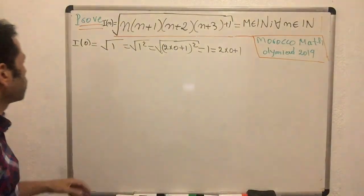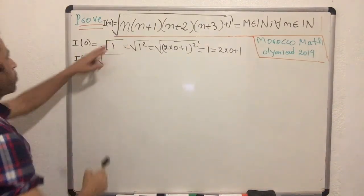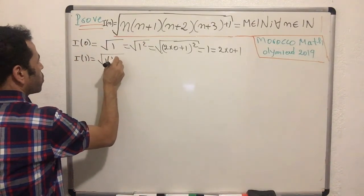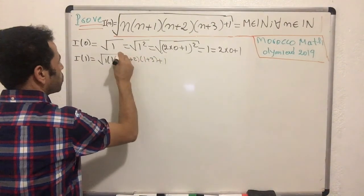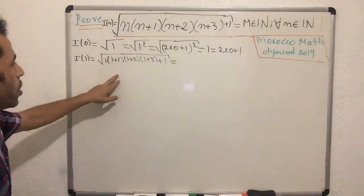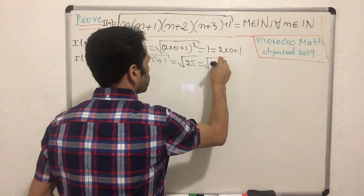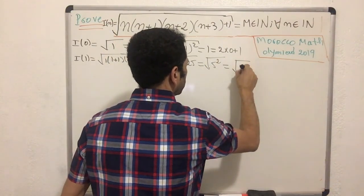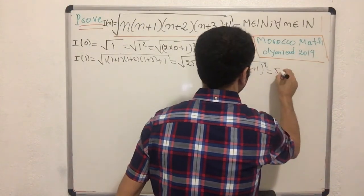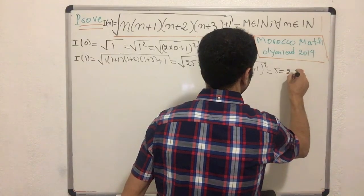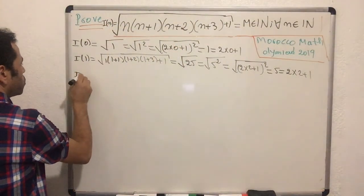Let's move on to the second term, i(1). Plugging the number one into the expression gives us 1×2×3×4 plus one, which equals 25. That is 5², and I can rewrite it as (2·2+1)². So i(1) equals 5, which equals 2·2+1 — an odd number.